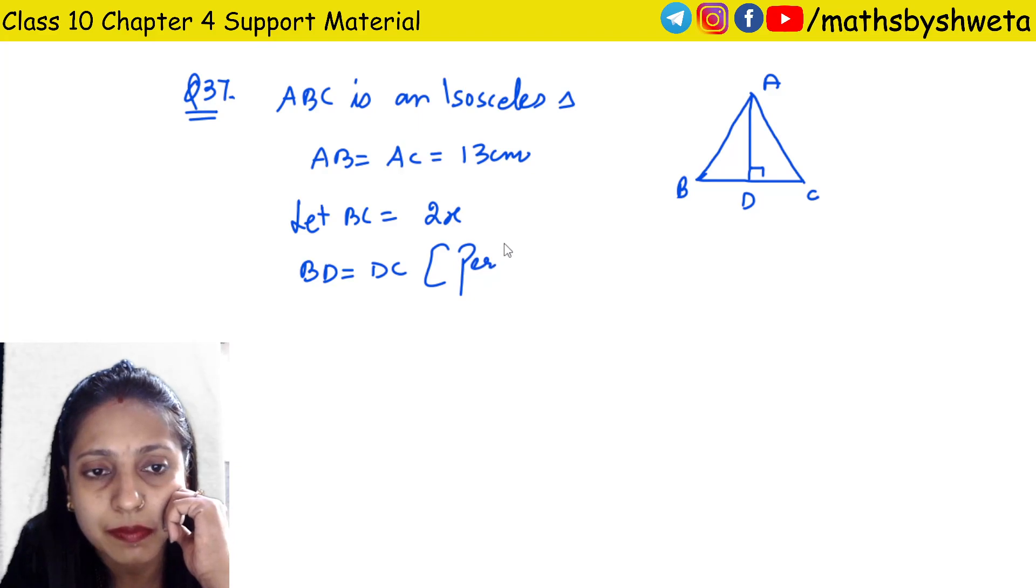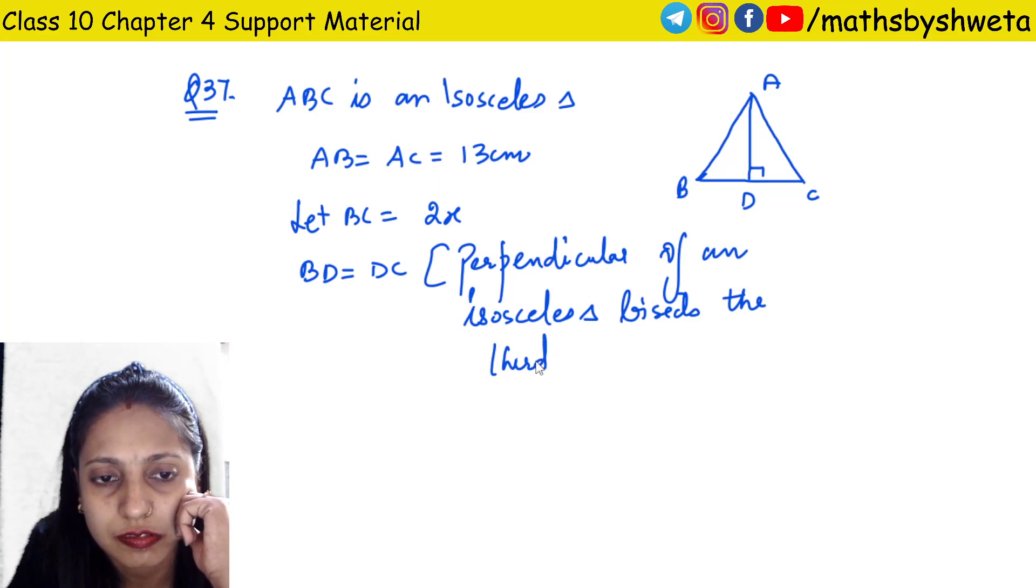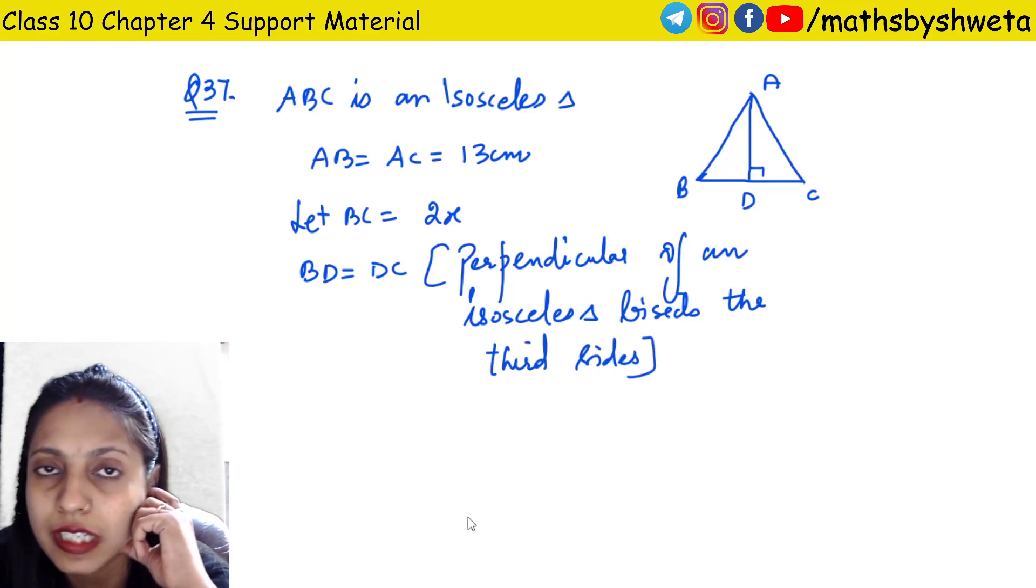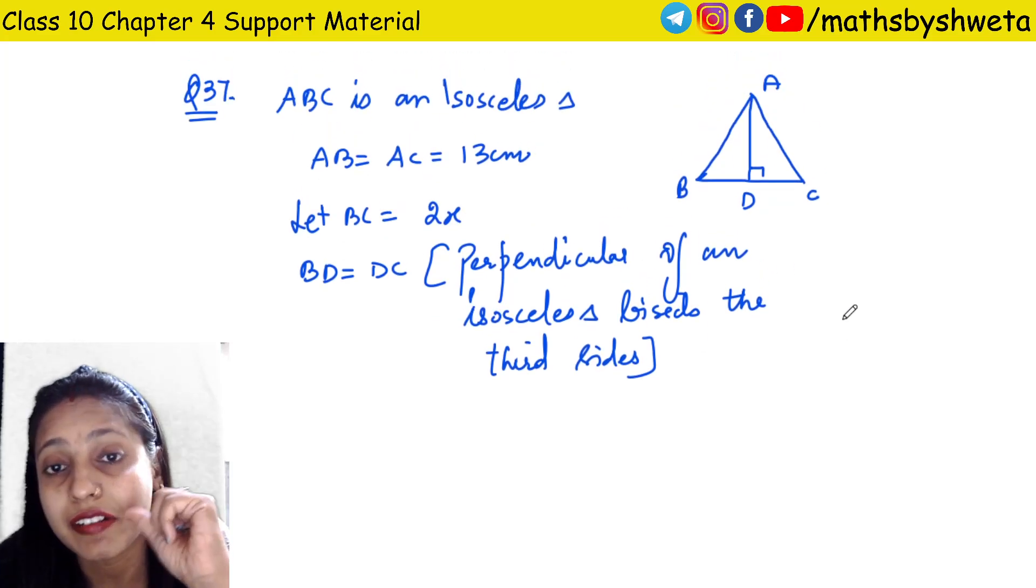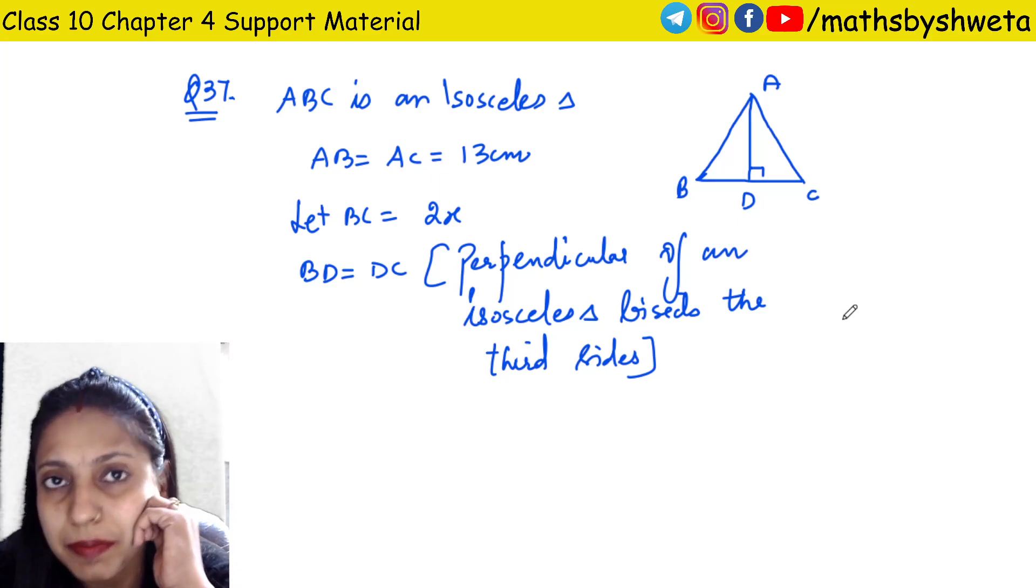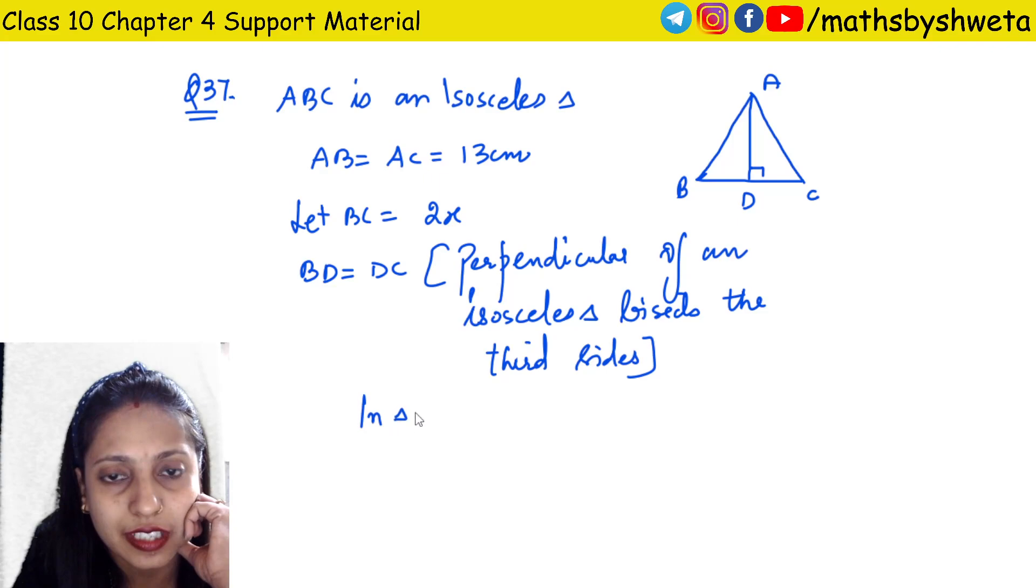Perpendicular of an isosceles triangle bisects the third side. Now you have a right angle triangle ABD and ADC, so you can apply Pythagorean theorem. In triangle ABD, AB square will be equal to AD square plus BD square.